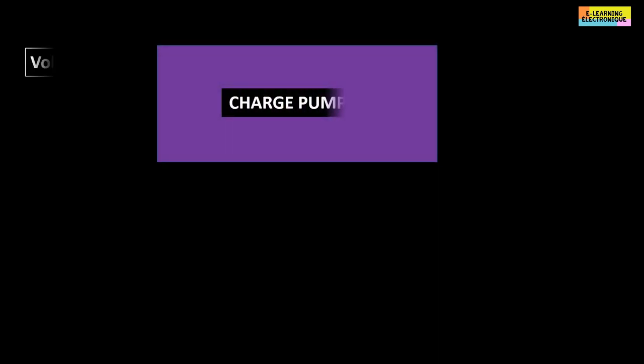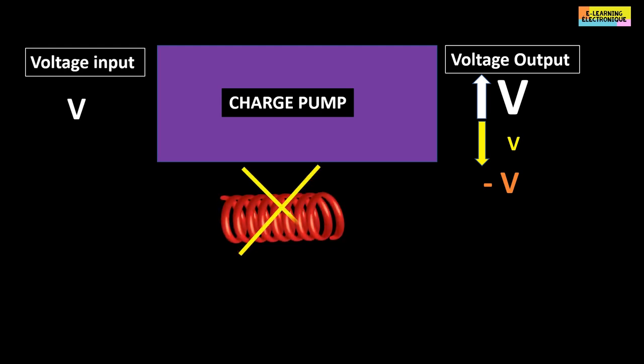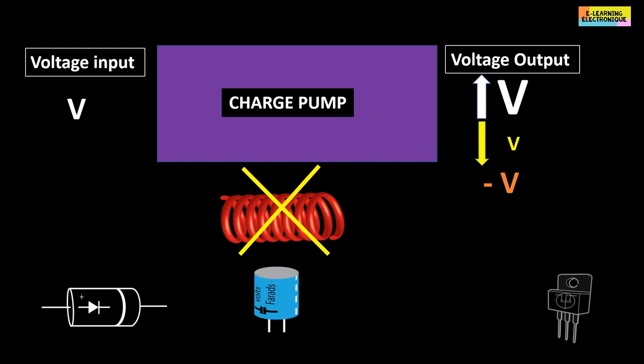Charge pumps are DC to DC converters that can increase, decrease or invert an input voltage. They are used in applications requiring low power. It is a circuit without inductance and it is composed of diodes, capacitors, electronic switches like MOSFETs and an oscillating circuit.